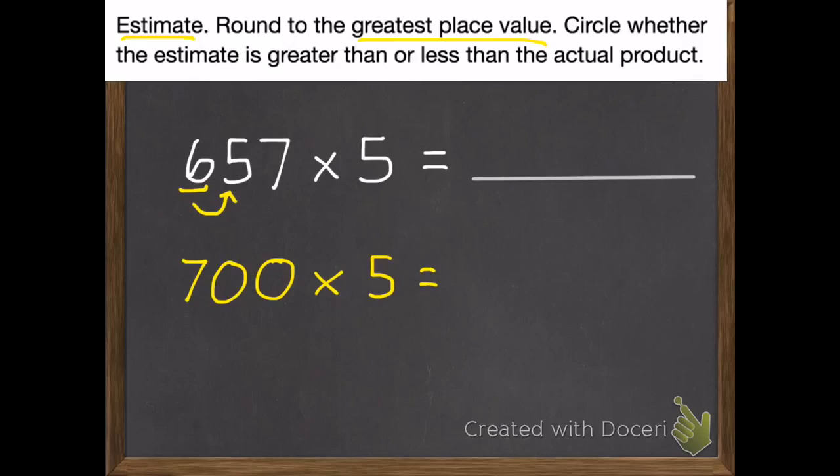So I'm going to get 700 times 5. We can now use what we learned in our last lesson. I can multiply the 7 times 5, which is 35, and then I have two zeros. But I'm not done.